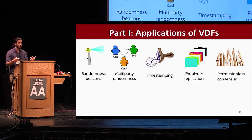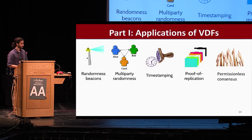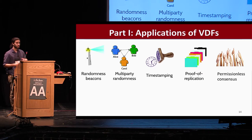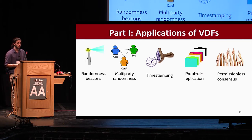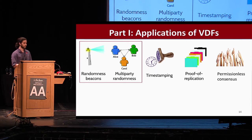Before describing constructions, I want to highlight several applications. There are many applications ranging from randomness beacons, multi-party randomness, timestamping, proof of space, proof of replication, and permissionless consensus protocols. In this talk, I'll focus on the application to randomness beacons and the related application of multi-party randomness.